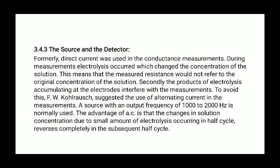A source with output frequency of 1000 to 2000 Hz is normally used. The advantage of AC is that change in solution concentration due to small amount of electrolysis occurring in half cycle reverses completely in the subsequent half cycle. For example, human ear is sensitive to above frequency range. An earphone may be conveniently used as a detector. The buzzing sound produced due to the passage of current is minimum at null point. Cathode ray oscilloscope can also be used as a detector.